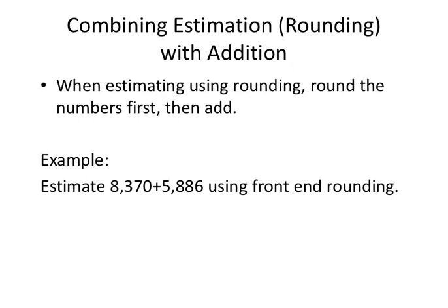So, when estimating using rounding, round the numbers first, then add. With front-end rounding, we're going to round each number individually. And what this also means is that sometimes we're not rounding to the same place value, okay? So we're going to round them one at a time and then do the addition.